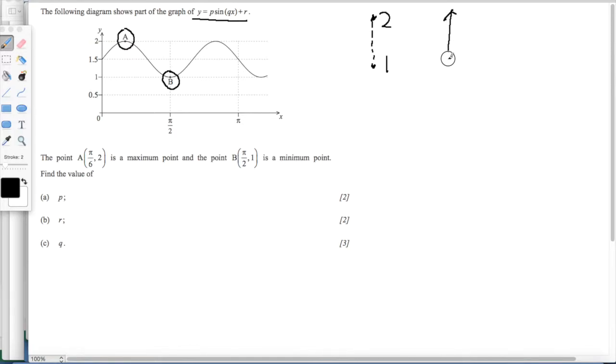From the basic form of the sin function, we know that the distance between the maximum and the minimum point is 2, because the maximum is 1 and the minimum is negative 1. But now the function shows that the distance between the maximum and the minimum point is 1. That means it has been multiplied by a scale factor of half, which implies that p is half.